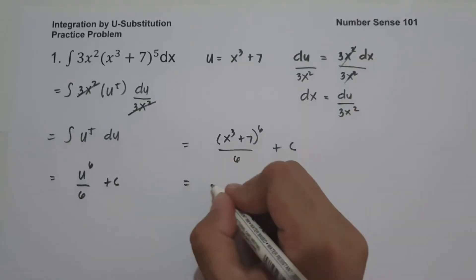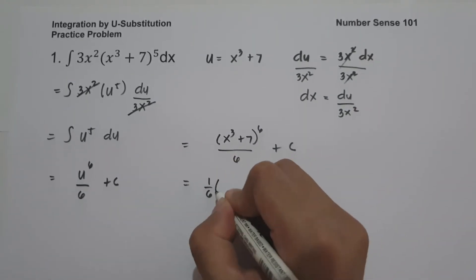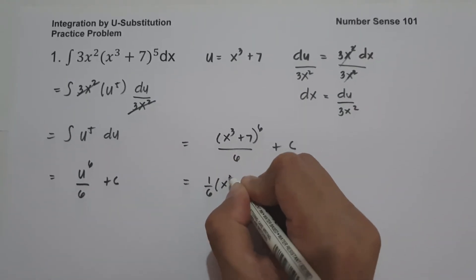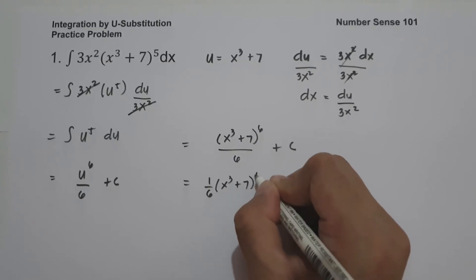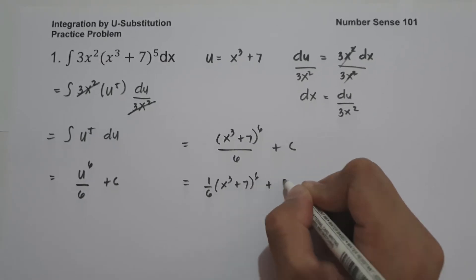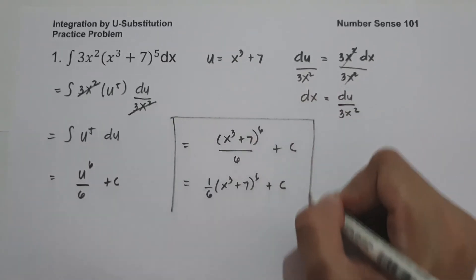This can also be written as one-sixth times (x cubed plus 7) raised to 6 plus c, and this will be our final answer.